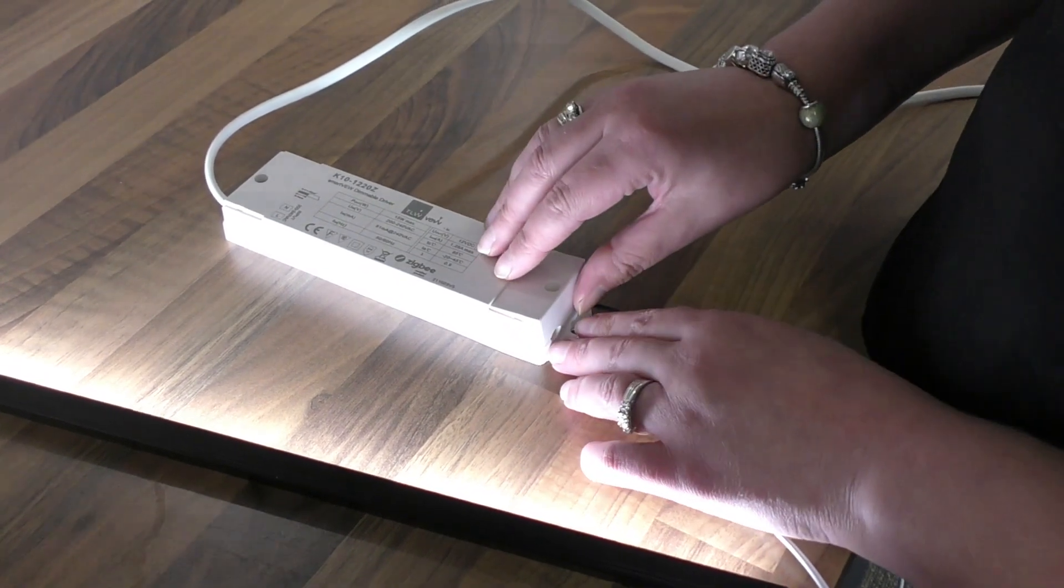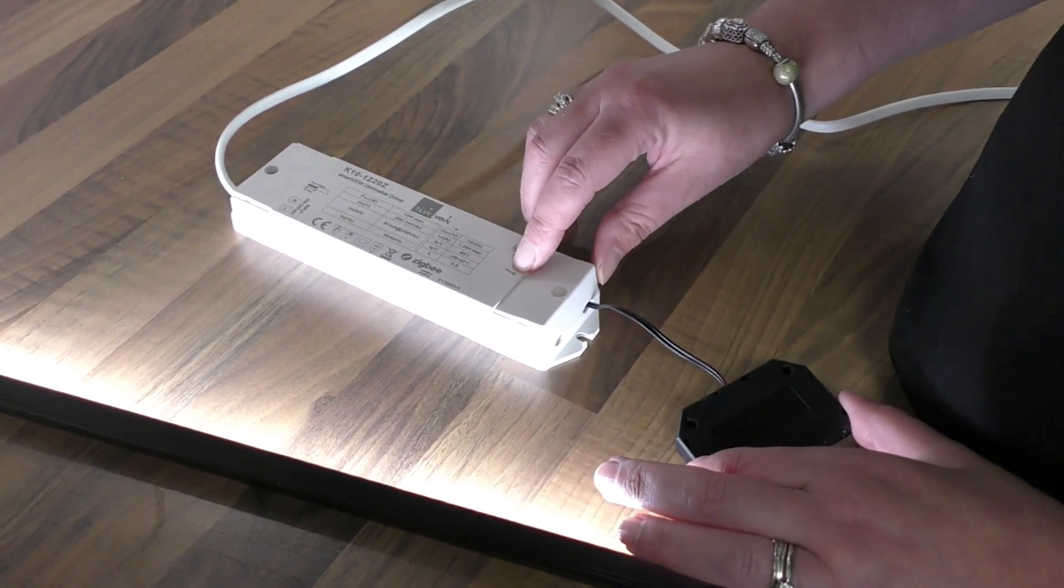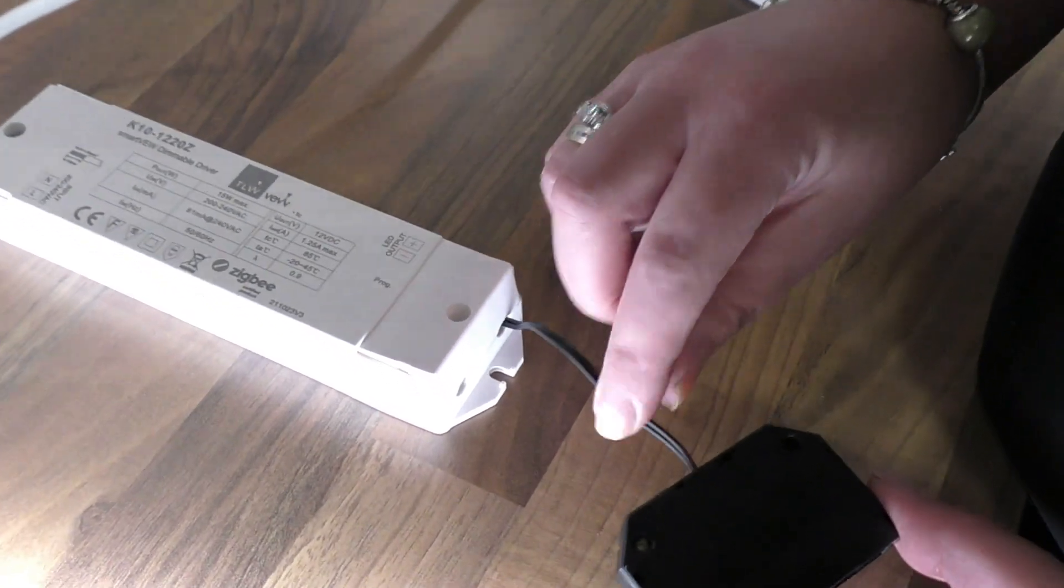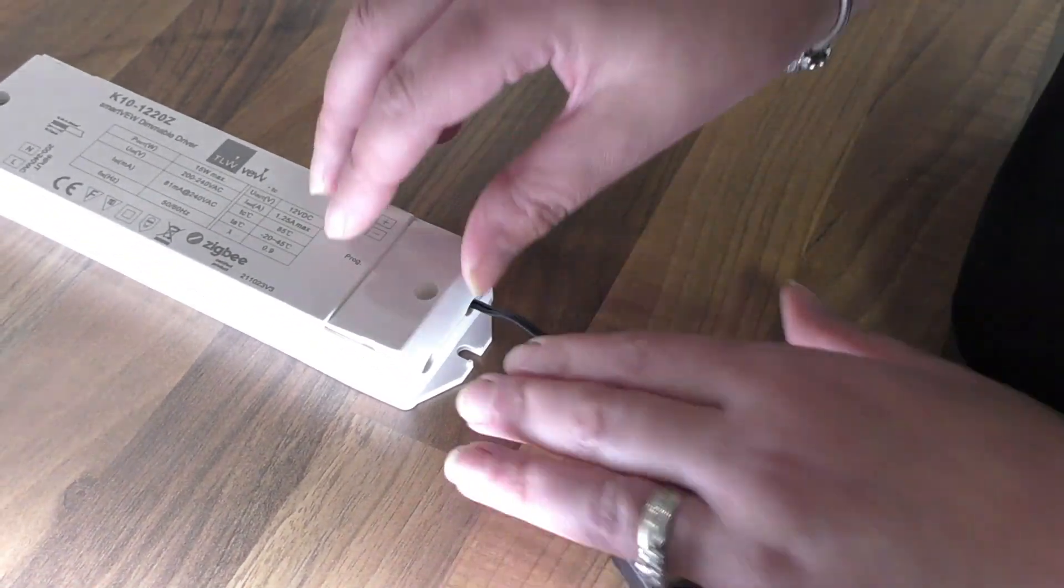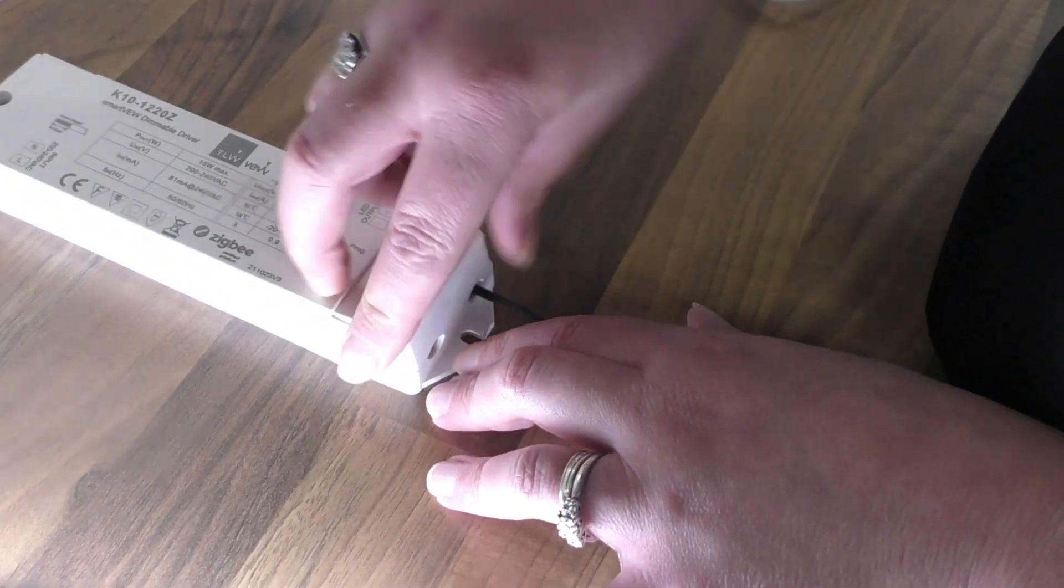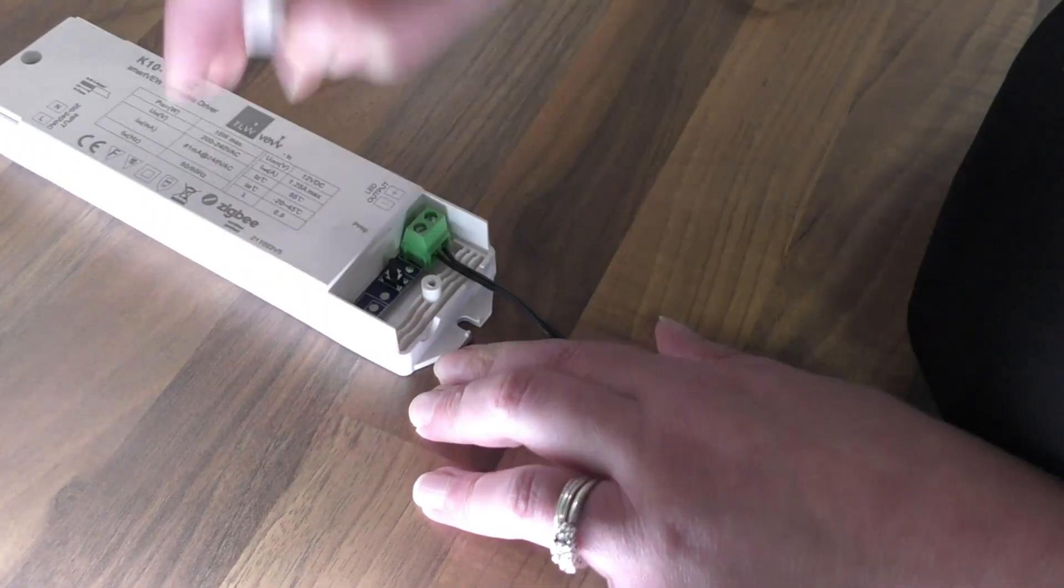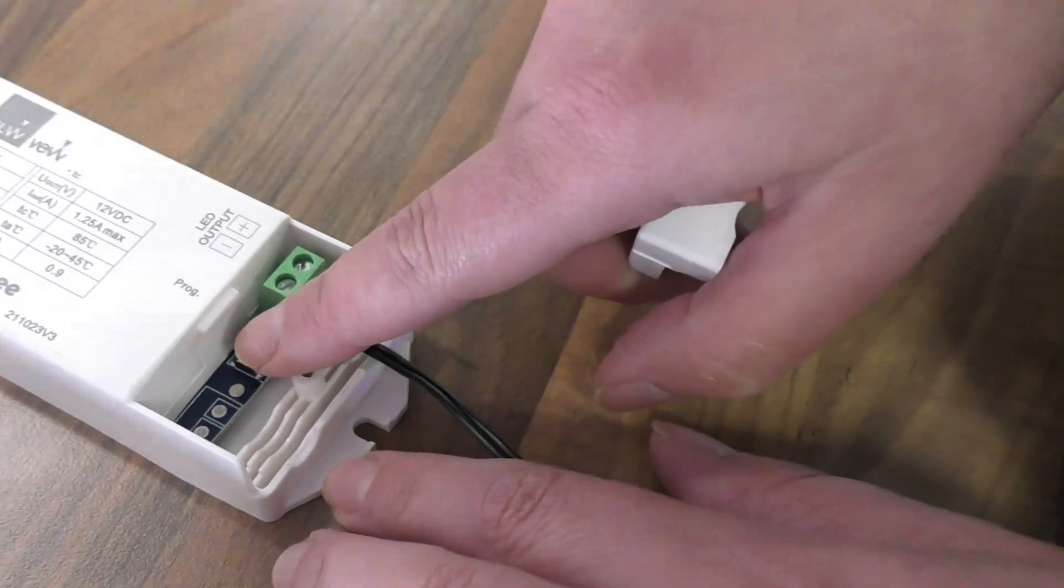The program button on this is on the side where it says prog and has the six-way port connector coming out of it. You lift up that side and there's a black button just there.